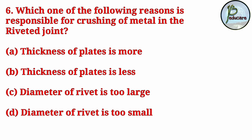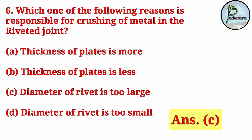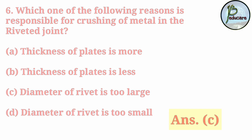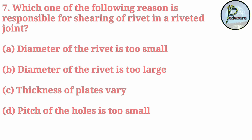Next question: which one of the following reasons is responsible for crushing of metal in a riveted joint? The correct answer is option C: the diameter of the rivet is too large.